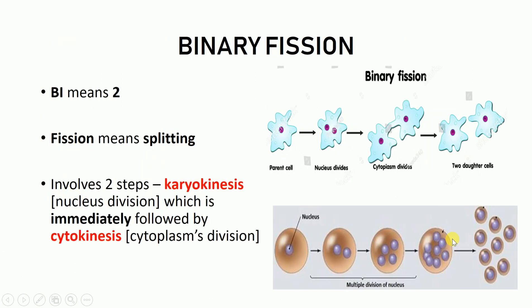So what is binary fission? The word binary fission itself describes its meaning. 'Bi' means two and 'fission' is a process of splitting. So binary fission means the process of splitting of an organism's body into two halves, and most of the time these two halves are quite similar to each other. We are talking about splitting in eukaryotes — that is, cells which have a well-defined nucleus.